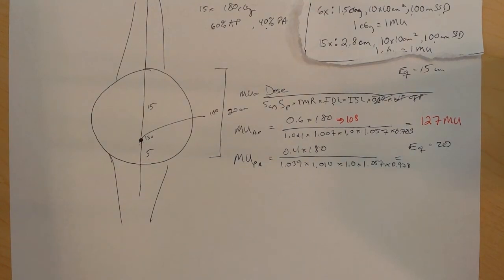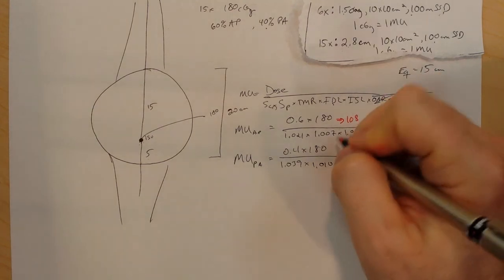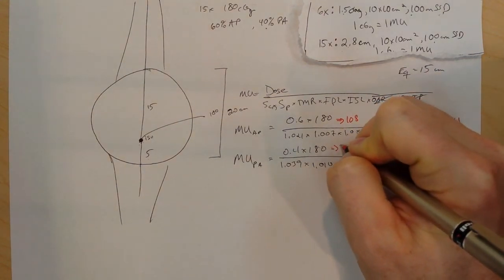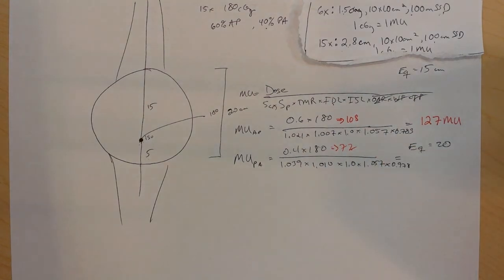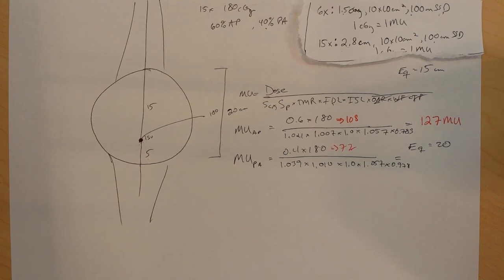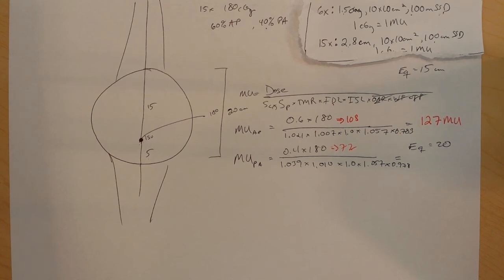And the MU from the PA: 0.4 times 180 gives me 72. Look at my total dose - 72 plus 108 gives me 180 centigrade. So I take 72 divided by 1.039, divided by 1.01, divided by 1, divided by 1.057, divided by 0.978, gives me 66 MU.